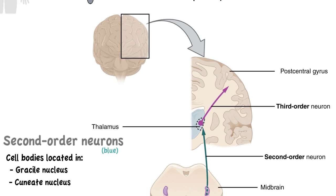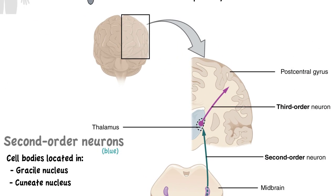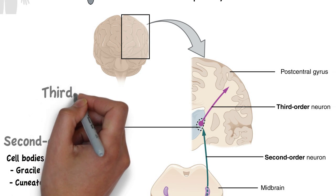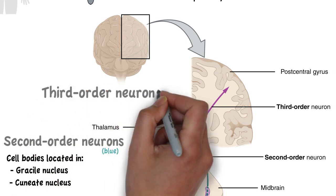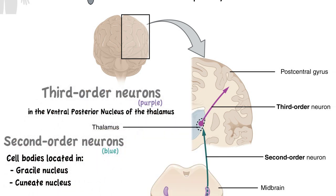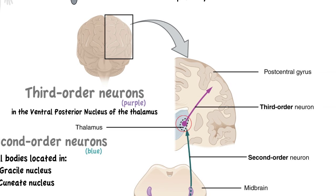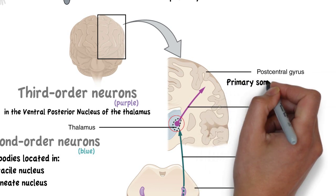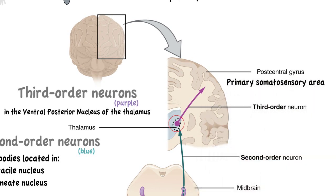The axon terminals of second order neurons synapse with the third order neurons in the ventral posterior nucleus of the thalamus, where third order neurons' cell bodies reside. These neurons project their axons to the primary somatosensory area of the cerebral cortex.